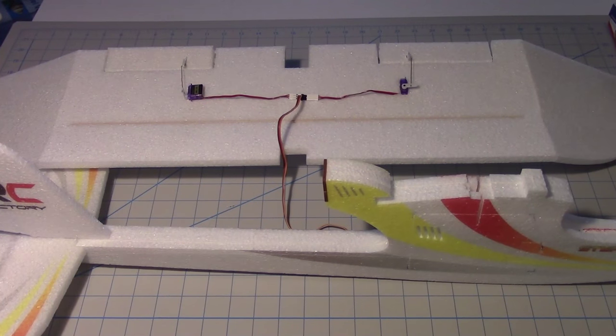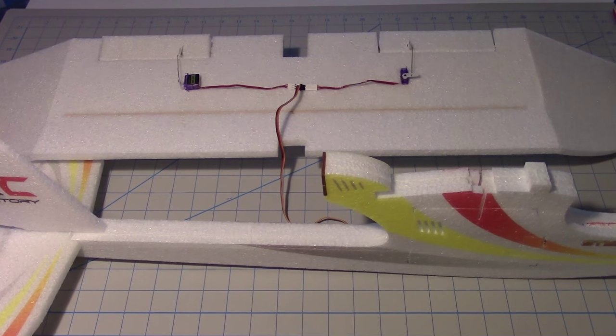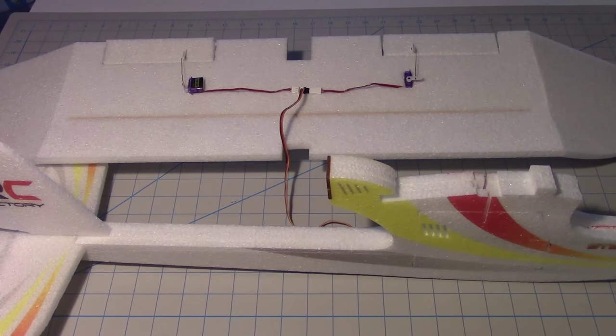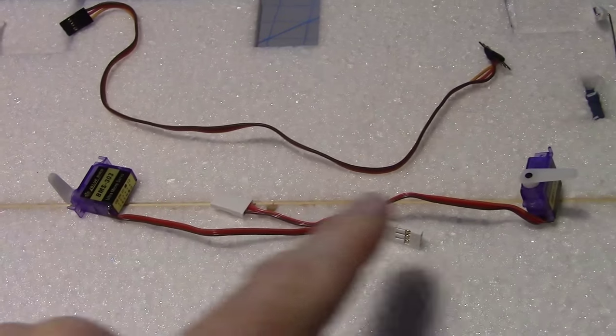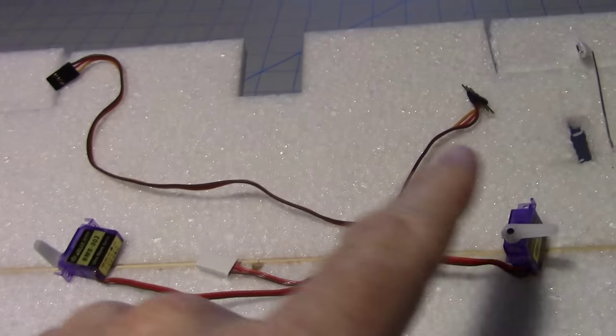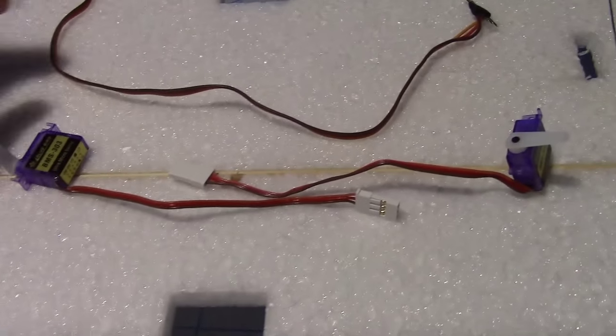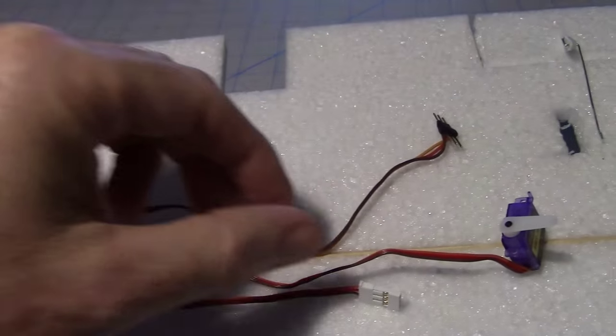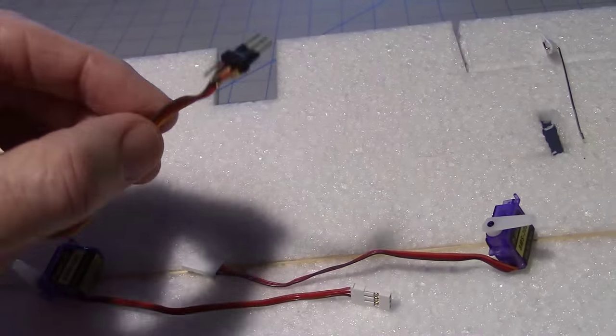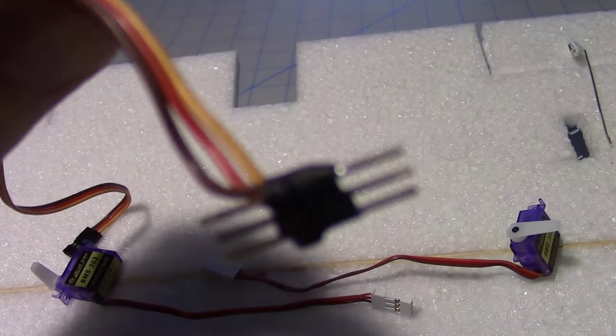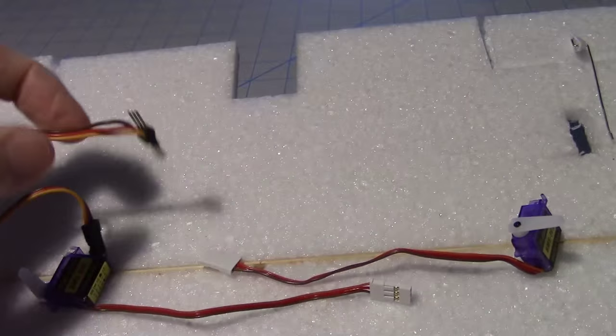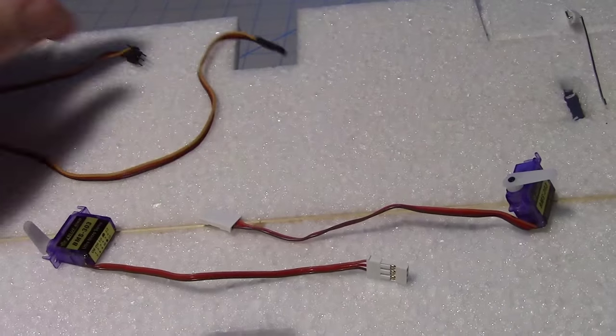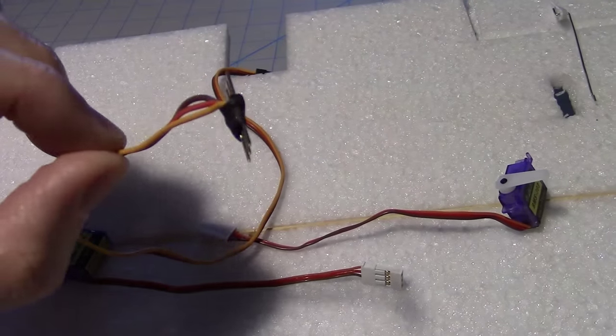Let's start Part 4 by putting the servos onto the control surfaces and testing them. I have two BMS303 micro servos here that I'll be installing in the wing. This is a little Y cable that John made up by soldering leads onto a header pin. The servos just plug onto that.